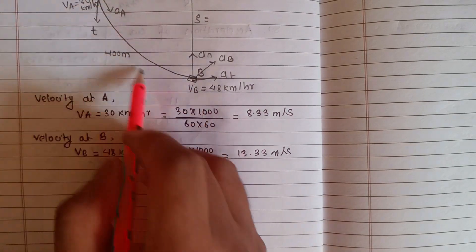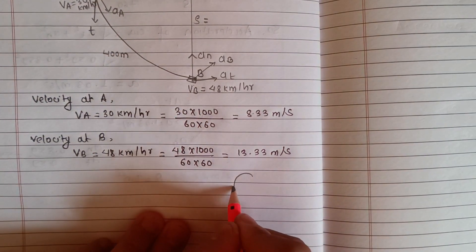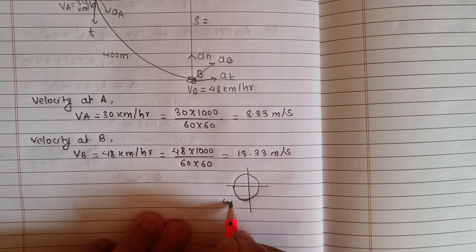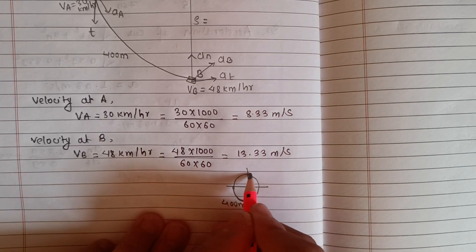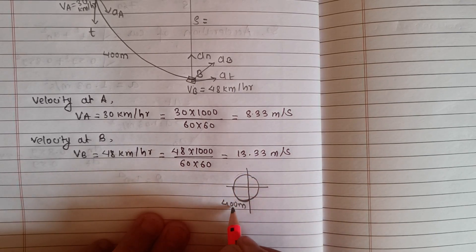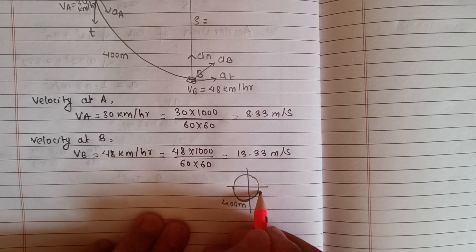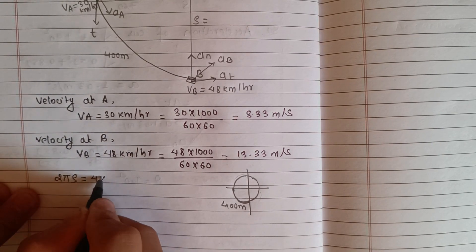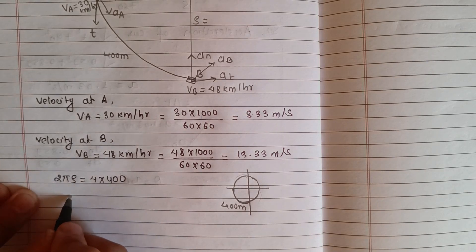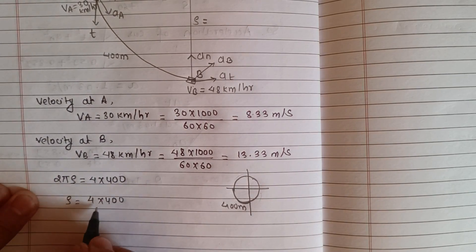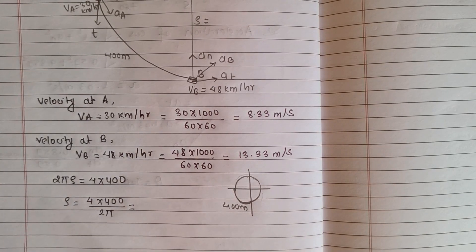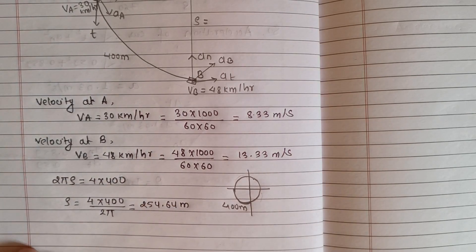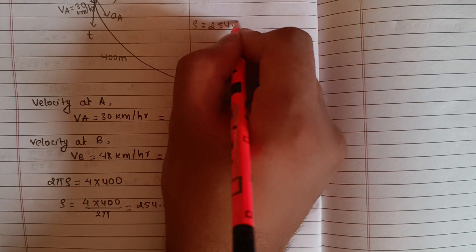For a quarter circle, given the length is 400 meters. Suppose the full circle circumference is 4 × 400 = 1600 meters. Full circumference equals 2πR, so R = 1600 divided by 2π. This gives radius R = 254.64 meters. So our radius ρ = 254.64 meters.